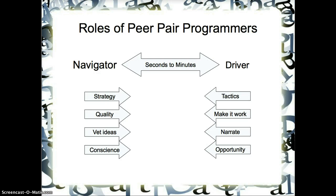Pair programming is done by two people switching roles in seconds to mere minutes. One may be called the navigator, one may be called the driver. While the navigator is looking at strategy and quality, the driver is focused on tactics and just getting it to work — making it green. The navigator is vetting new ideas while the driver narrates what he's doing and looks for ways to get through quickly and do a better job faster. The navigator acts as his conscience.